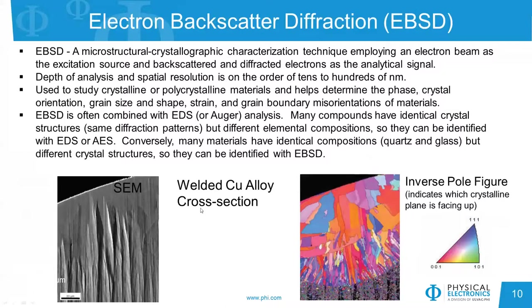In the example we have here, in the lower left we have an SEM image of a welded copper alloy cross-section, and on the right we have what's called an inverse pole figure from the EBSD analysis. You can see a couple of things very clearly. First, we can see the size and shapes of the grains — near the top we have much larger grains than near the middle of the image. You also see, in this inverse pole figure, the crystalline planes that are facing up. We see primarily reds and blues, indicating the 001 and 111 faces are facing up. This type of information is very important for determining structural integrity of welds like this.